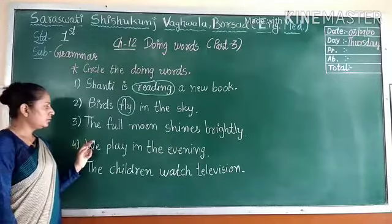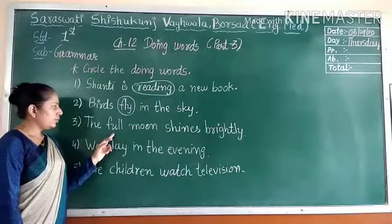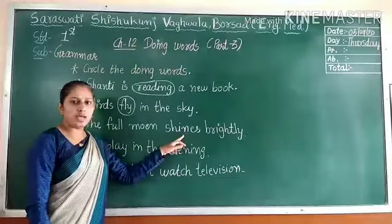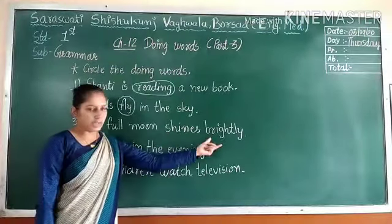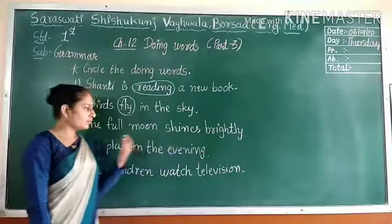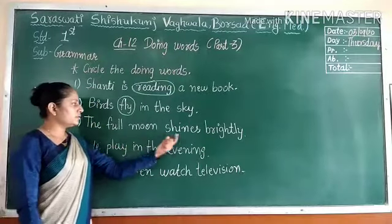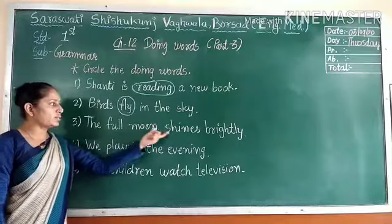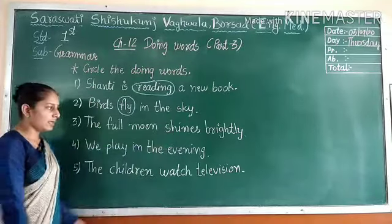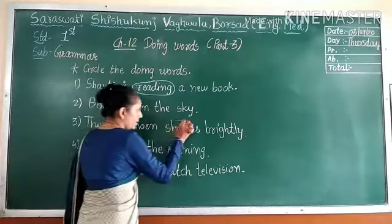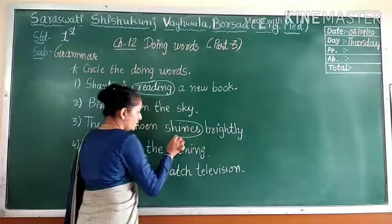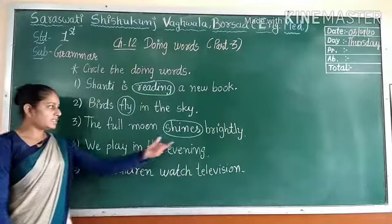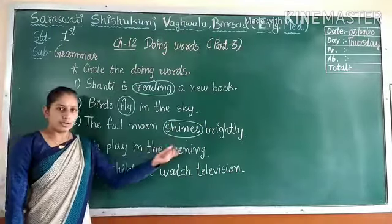Third number: The full moon shines brightly. In this sentence the moon is doing shines. So circle the word shines — it is doing work, shines is the doing word.